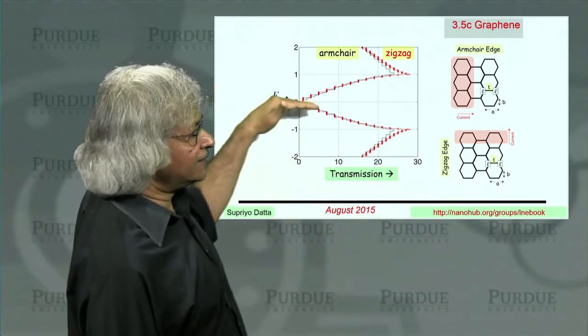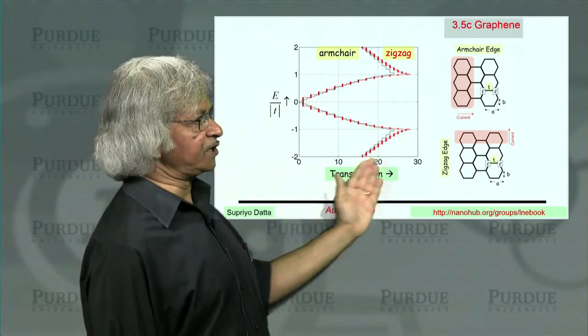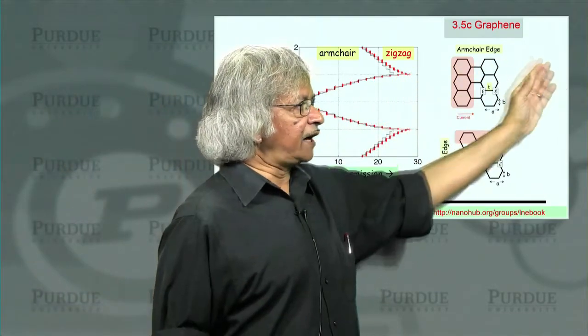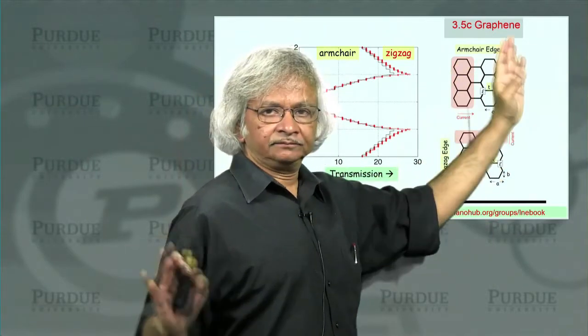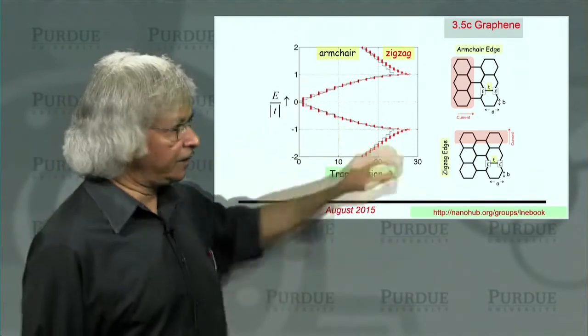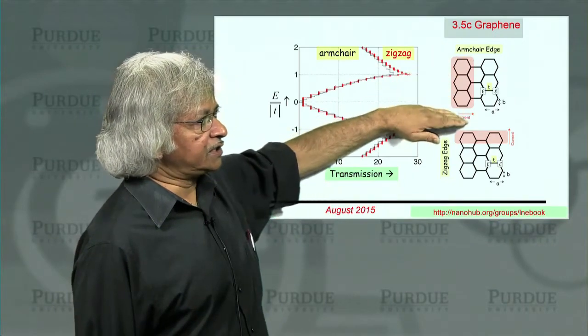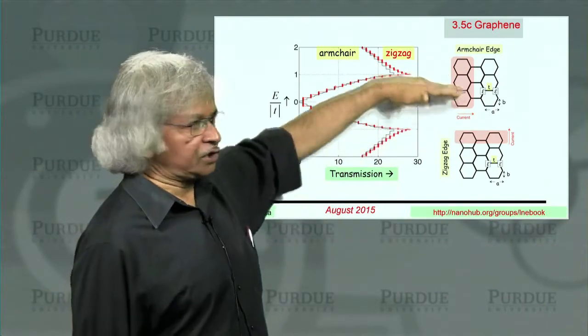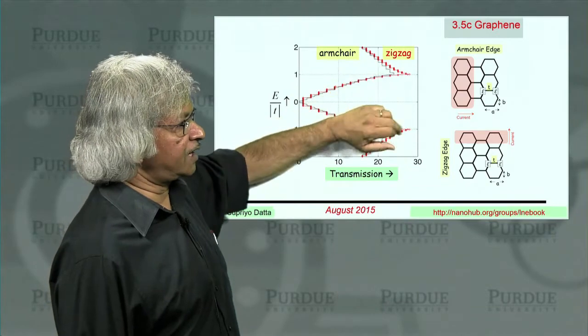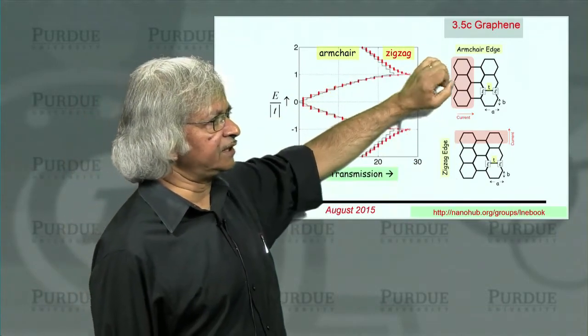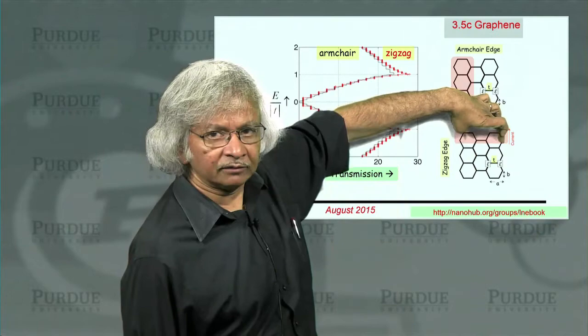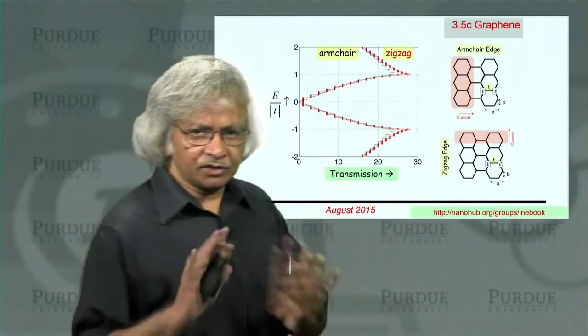So if you did the armchair edge, you get this black curve. And if you do the zigzag edge, you get the red curve. And what are we plotting here? Well, this is the function of energy, the transmission. And this is for a ballistic conductor. That is, you're assuming you have a ballistic graphene. You have one contact here, another contact there. And we chose a specific width in this case. I think it's about like 15 units or so in this direction. And the two, armchair and zigzag, were chosen such that the width is approximately the same.